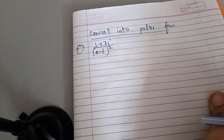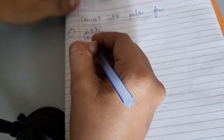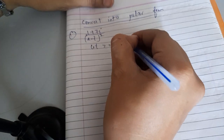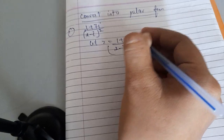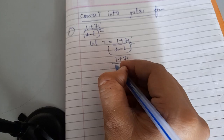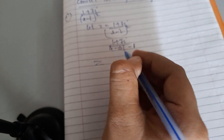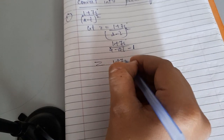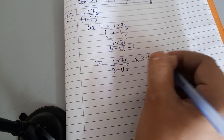The question is to convert (1 + 7i)/(2 - i)² to polar form. Let z = (1 + 7i)/(2 - i)². Expanding the denominator: (2 - i)² = 4 - 4i + i² = 4 - 4i - 1 = 3 - 4i. So z = (1 + 7i)/(3 - 4i).